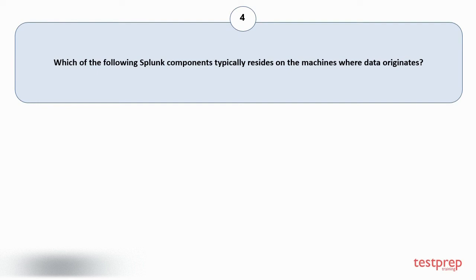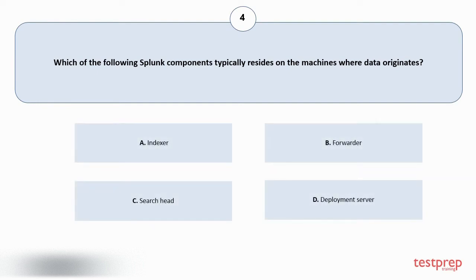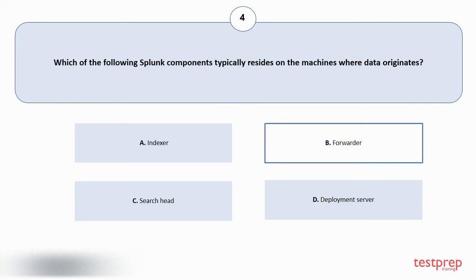Question number four: which of the following Splunk components typically resides on the machines where data originates? Your options are: A) indexer, B) forwarder, C) search head, D) deployment server. The correct answer is option B.